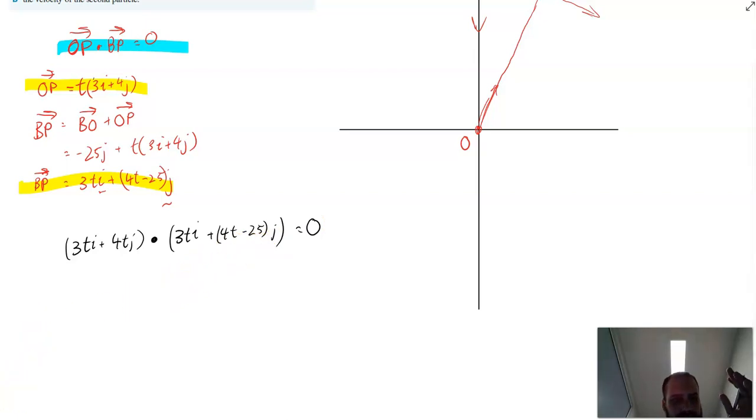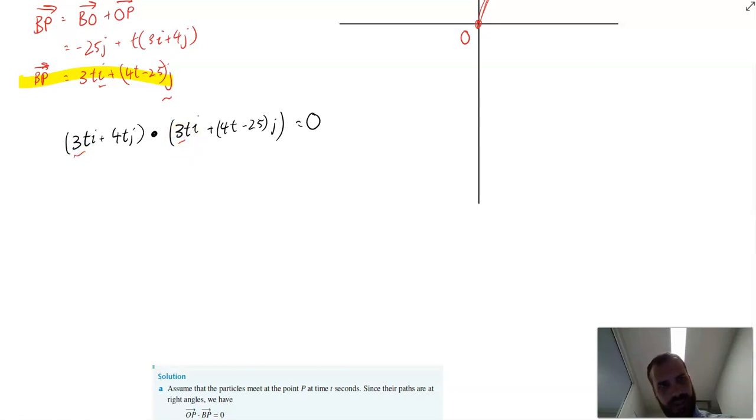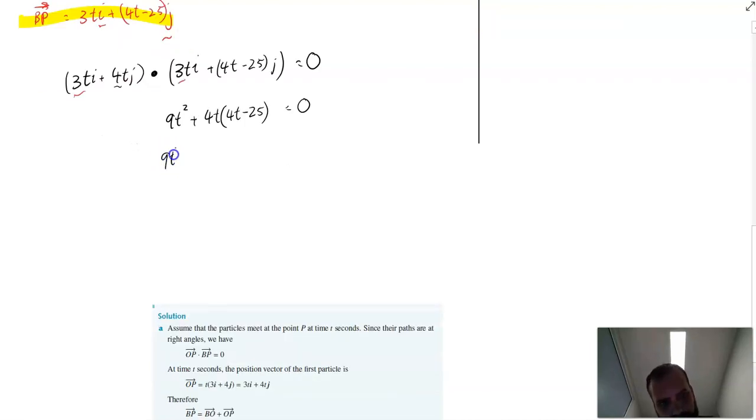Now, if we do the dot product there, multiply the i's together, we get 9T squared. Multiply the j's together, we get 4T times bracket 4T minus 25. And we say that's equal to zero. And expand that out a little. We'll go 9T squared plus 16T squared minus 100T equals zero. What do I get? I get 25T squared minus 100T equals zero.